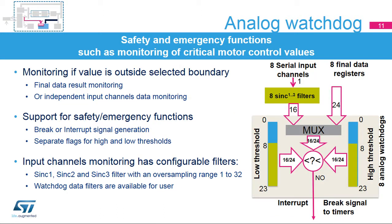The analog watchdog monitors sampled analog data to see if it remains within the selected high and low threshold values. The input to the analog watchdog function can come from the result of the final converted data or directly from the input serial channels through a configurable filter. If data exceeds the allowed boundaries, an interrupt can be invoked or a break signal generated. If an interrupt is invoked, the software decides about the next actions. If a break signal is generated, this break signal can perform a safety function directly by hardware.